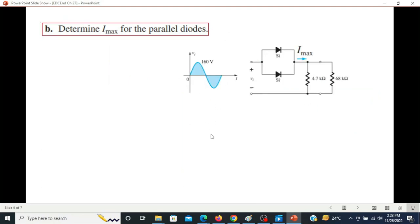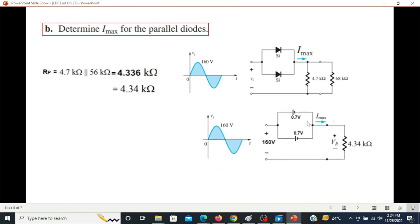We convert these into parallel, so solving we get 4.34 kilohms. Redraw the circuit with the equivalent resistance, and we name the voltage across this to be VR.